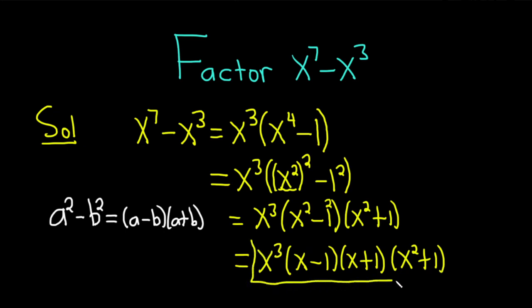And this would be the fully factored form of x to the 7th minus x cubed. So it takes a little bit of work. You get it this far. You could actually keep factoring, but we're only factoring over real numbers.